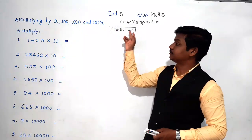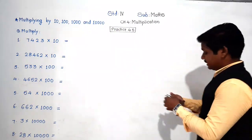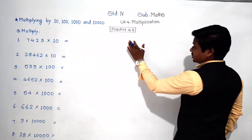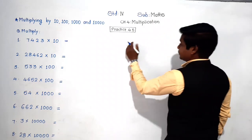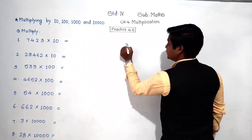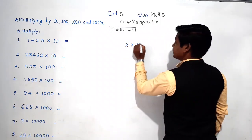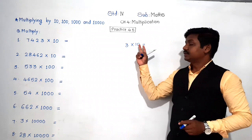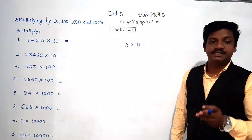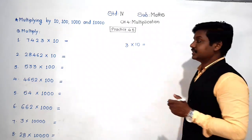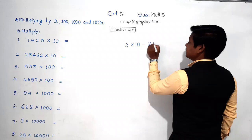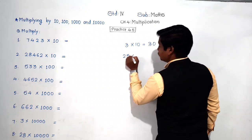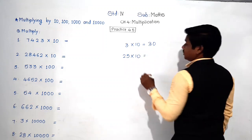Before solving Practice 4.1, I will show you some small examples using both methods — the traditional method of multiplication and the shortcut. Suppose there is 3 into 10. You multiply 3 by 10 using the table of ten: ten ones are ten, ten twos are twenty, ten threes are thirty. So the answer is thirty. One more example: 25 into 10.